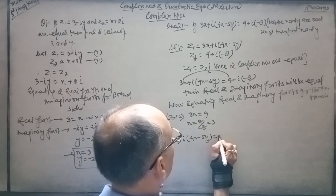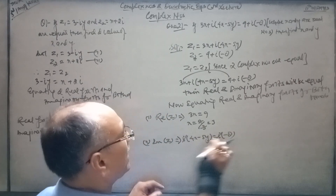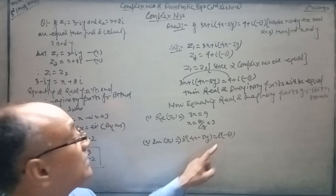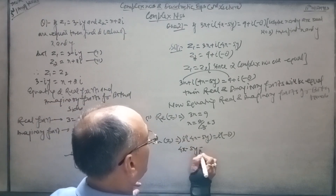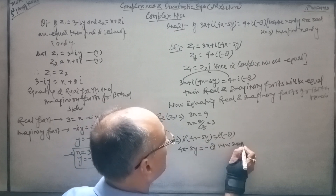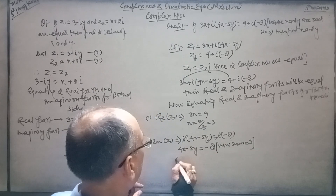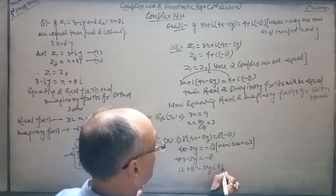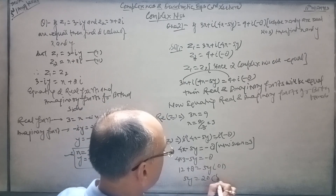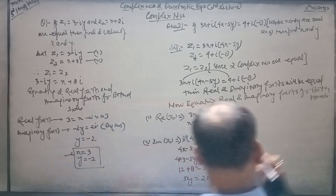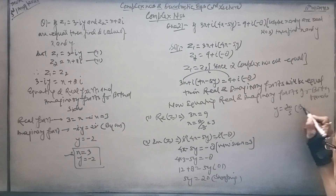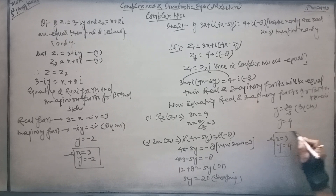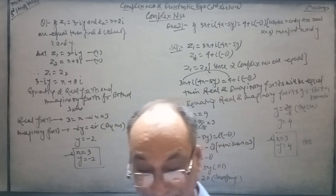Equating imaginary parts: 4x minus 5y equals minus 8. Substituting x equals 3: 4 times 3 minus 5y equals minus 8, so 12 plus 8 equals 5y, giving 5y equals 20, therefore y equals 20 over 5, which is y equals 4. Therefore x equals 3 and y equals 4. These are the values of x and y.